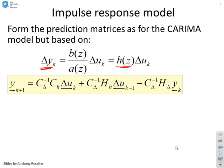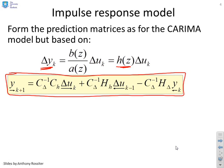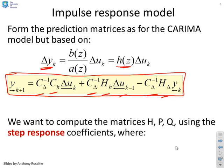So I've got Δy equals h(z)Δu. By inspection, I can say the prediction equations have to be given by this expression: CΔ⁻¹CH times Δu future, CΔ⁻¹H subscript H Δu past, and CΔ⁻¹HΔ times y past. So I can do that by inspection, just using the previous video.